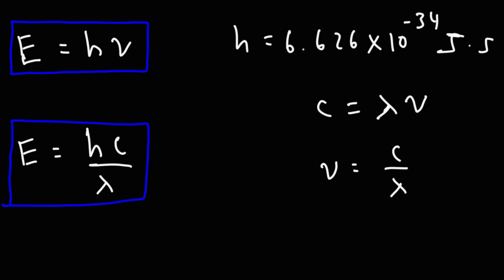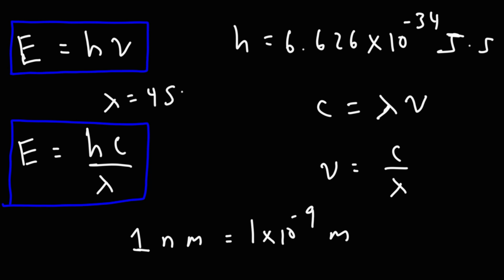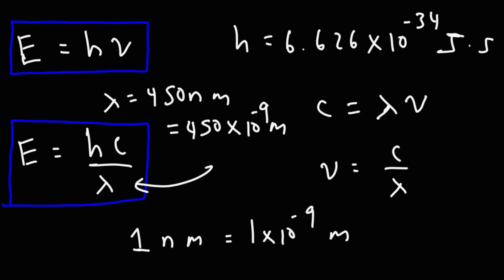Typically you're going to be given the wavelength in nanometers, so you need to remember that 1 nanometer is equal to 1 times 10 to the minus 9 meters. So if your wavelength is, let's say, 450 nanometers, you could plug 450 times 10 to the negative 9 meters into this formula to get the energy of the photon.